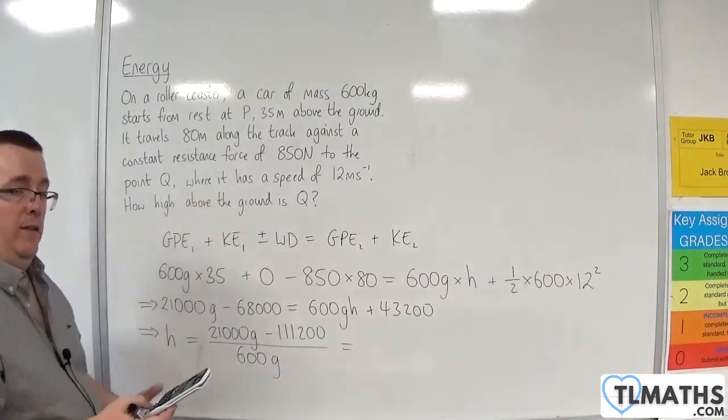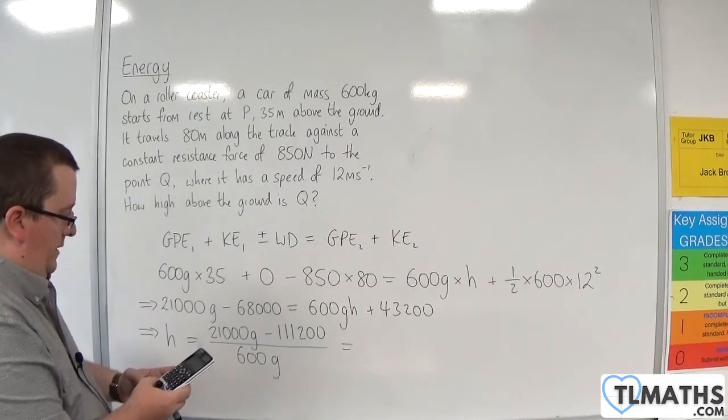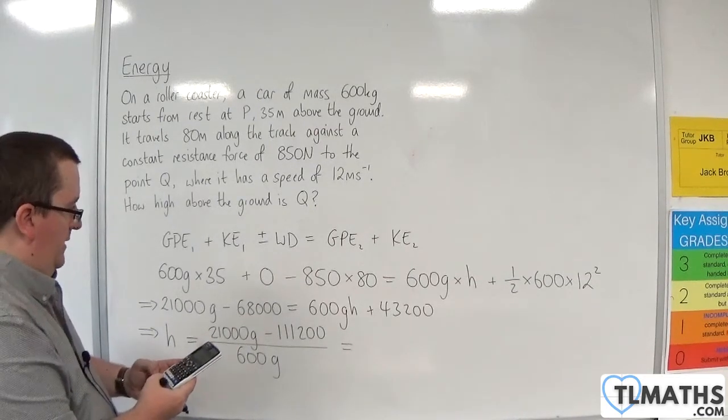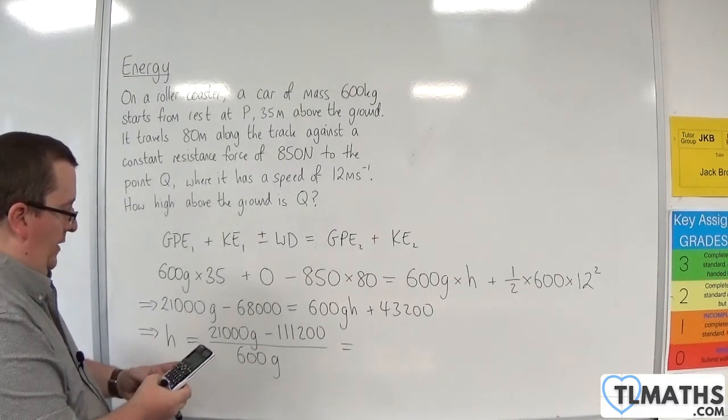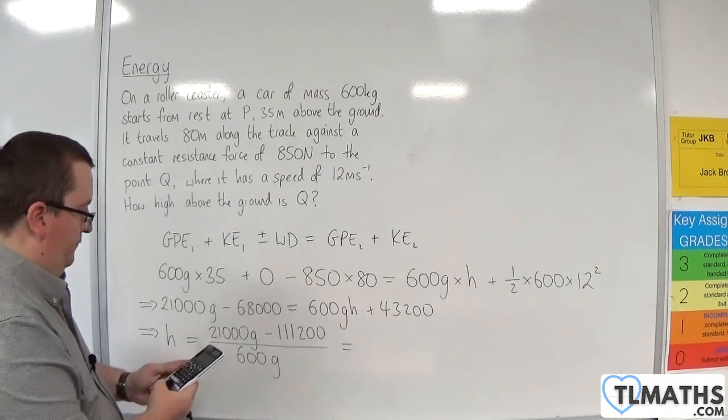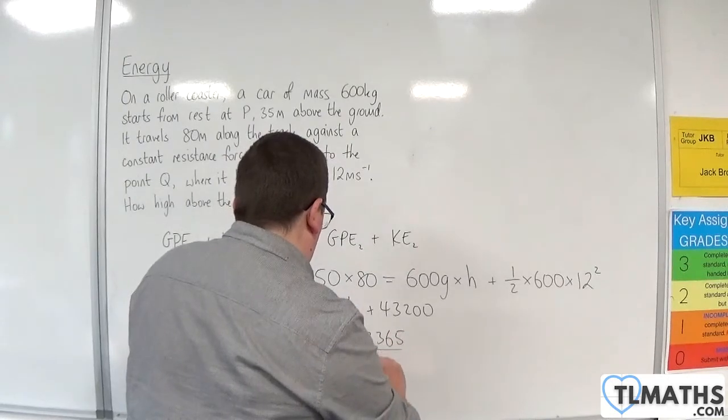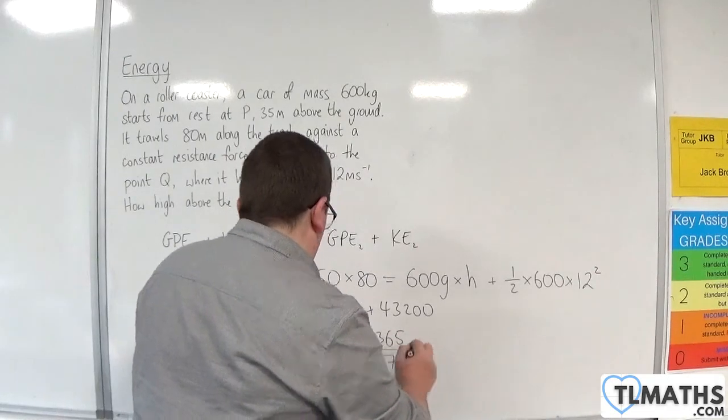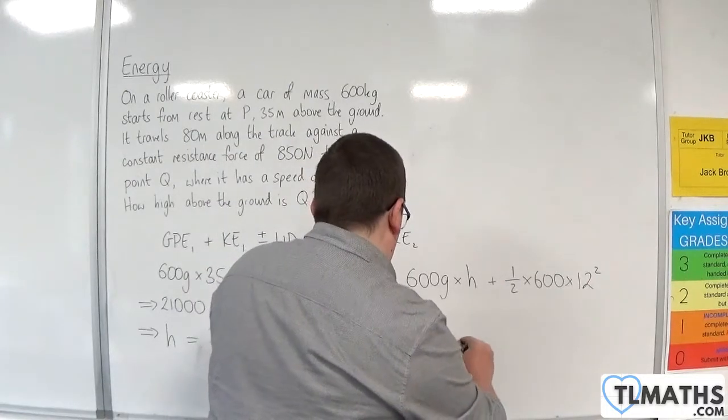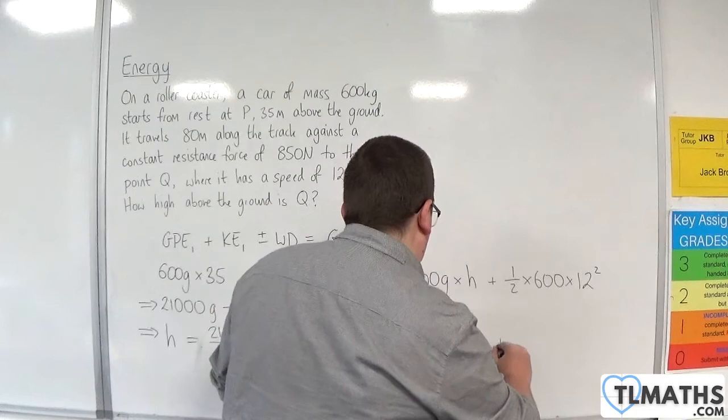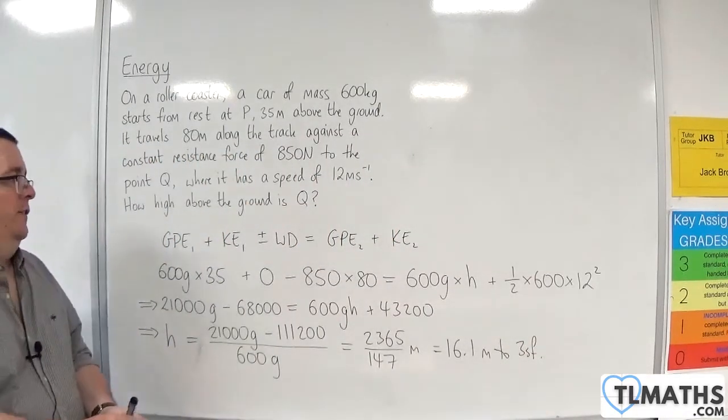So now if I plug in the G is 9.8, I'm going to get 21,000 times 9.8, take away 111,200 over 600 times 9.8. And we get 2,365 over 147 metres, which is equal to 16.1 metres to three significant figures.